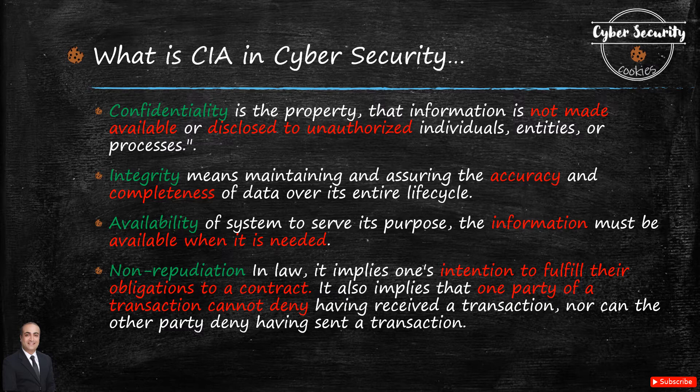Non-repudiation gives us an assurance that the sender of information is provided with proof of delivery, or the recipient is provided with proof of the sender's identity. At any stage, neither of them can deny that the information has been processed. For example, if Mike sends a message to Bob, Bob has proof that the message was sent to him by Mike, and Mike cannot deny that the message was sent by him.